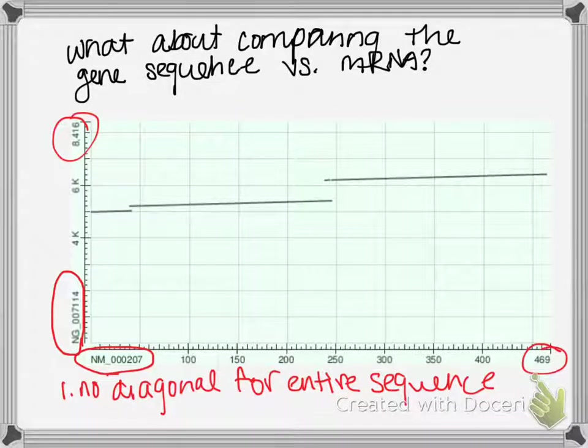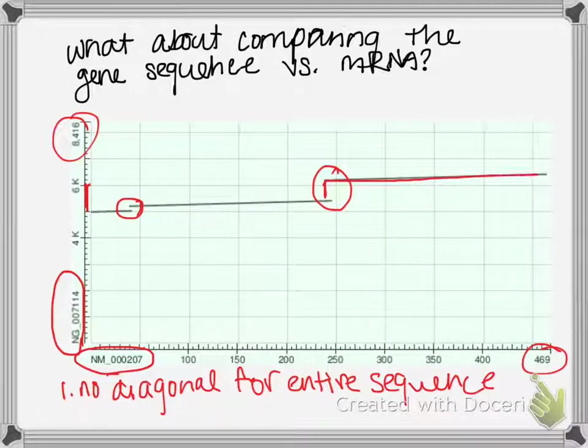If we looked closer, this kind of visually quickly tells us that there's these breaks here. And these breaks mean that there was a region completely in the gene sequence that was not present in the mRNA sequence, and then it started matching up perfectly again.